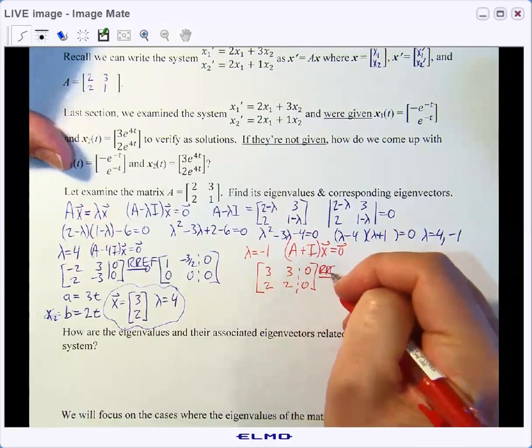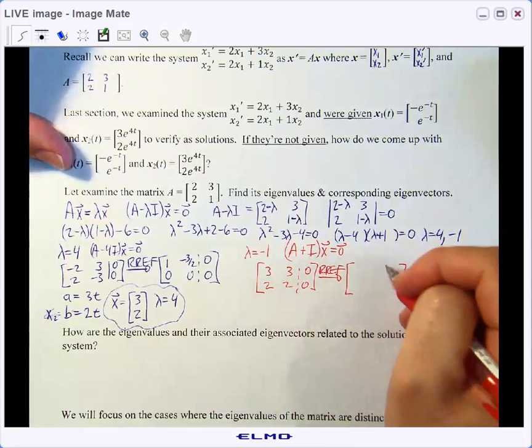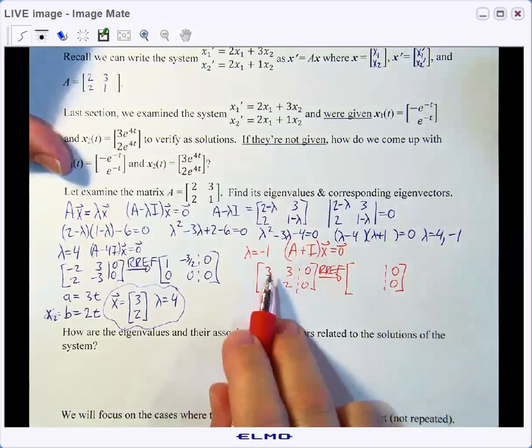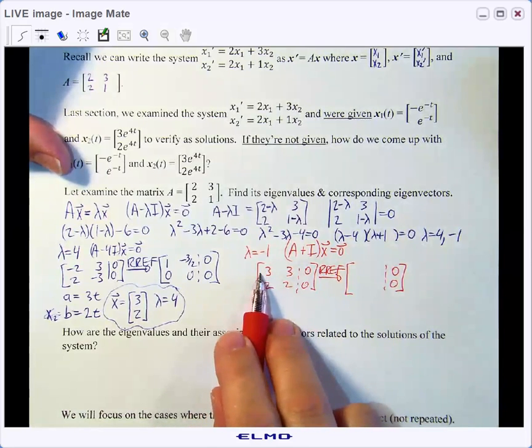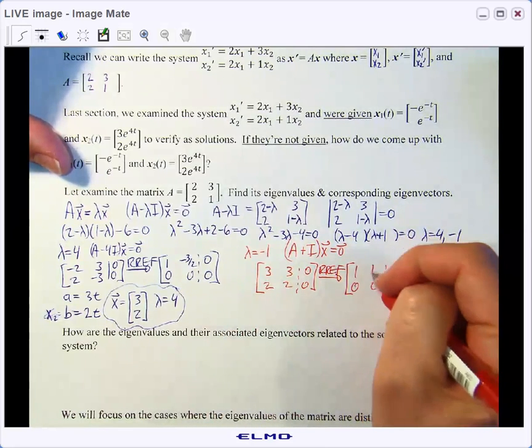And again, putting this into reduced row echelon form. And because Professor Rudrero made you do some of those row operations by hand, you can probably do this one in your head. So we could times by 1 third on this row and then do negative 2 times that row added to the bottom row, getting 1 and 1.